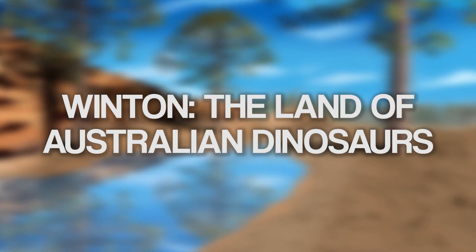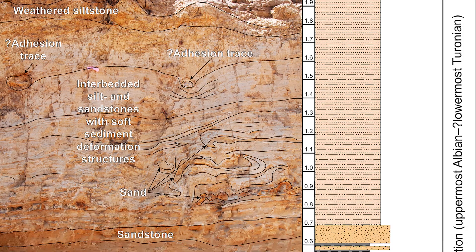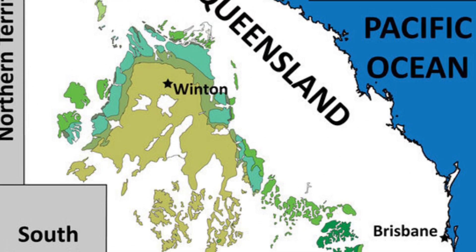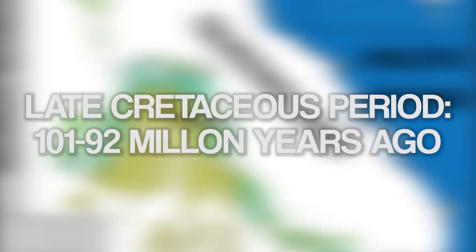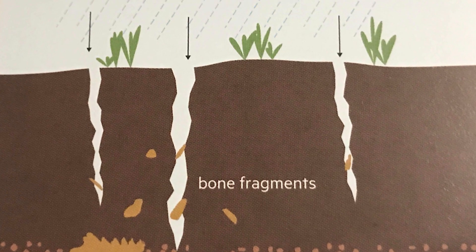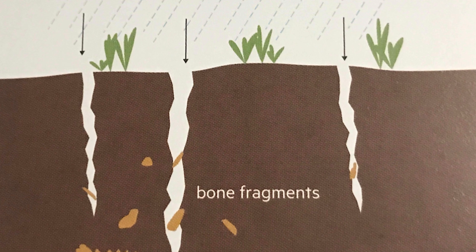A prehistoric environment is called a paleo environment, and there are a number of paleo environments in the Winton region. To understand these, we need to study the fossils and rock layers found in the Winton Formation. These layers consist of sandstone, mudstone, siltstone and coal deposits. They cover a massive area across Queensland, South Australia and New South Wales, and have been dated to the late Cretaceous period, between 101 and 92 million years ago. Many dinosaur fossils have been found because the clay-rich black soil transports them up to the surface every year.